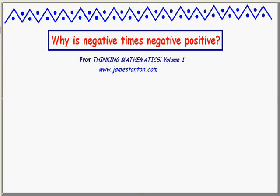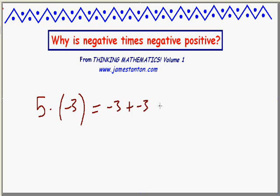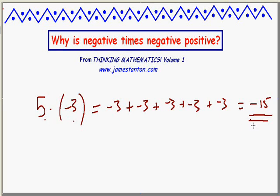Let's start bringing negative numbers into the mix. Here's a positive number times a negative number — can I make sense of this? Well, if I think of multiplication as repeated addition, it's fine. This is saying 5 groups of negative 3. Negative 3, negative 3, negative 3, negative 3, and negative 3 — that makes negative 15. So 5 groups of negative 3, no problem: negative 15. Positive times negative, in this case, is negative.